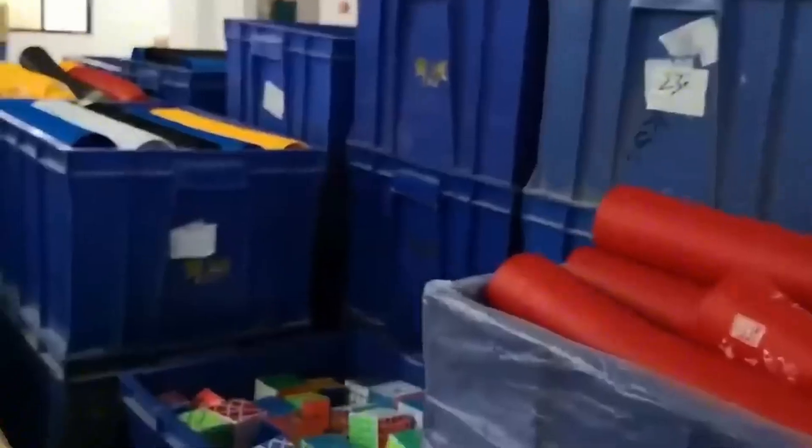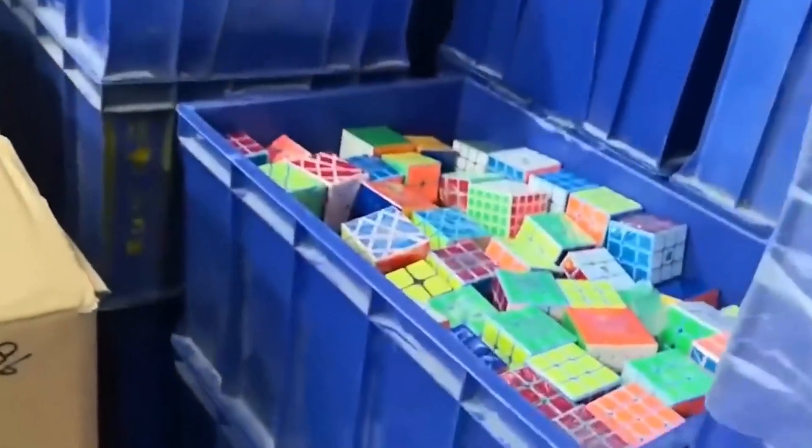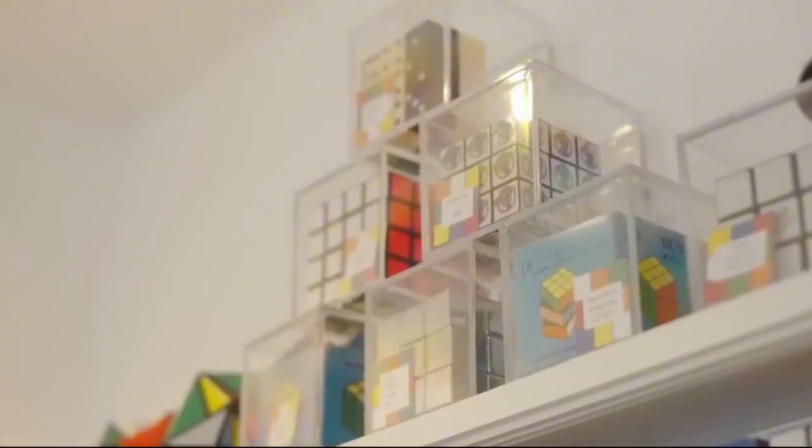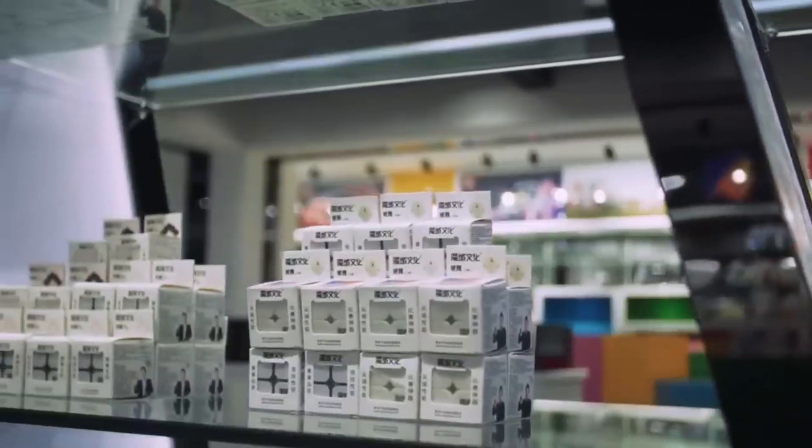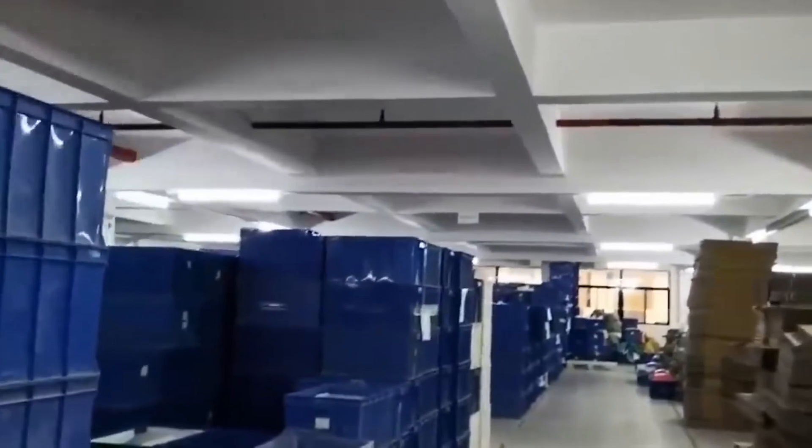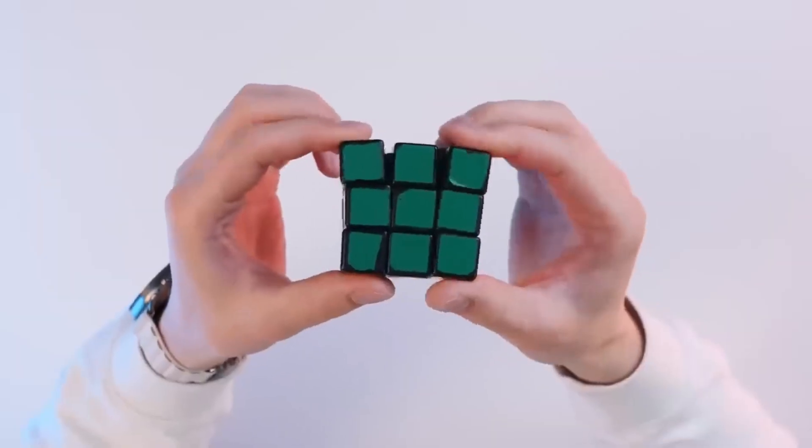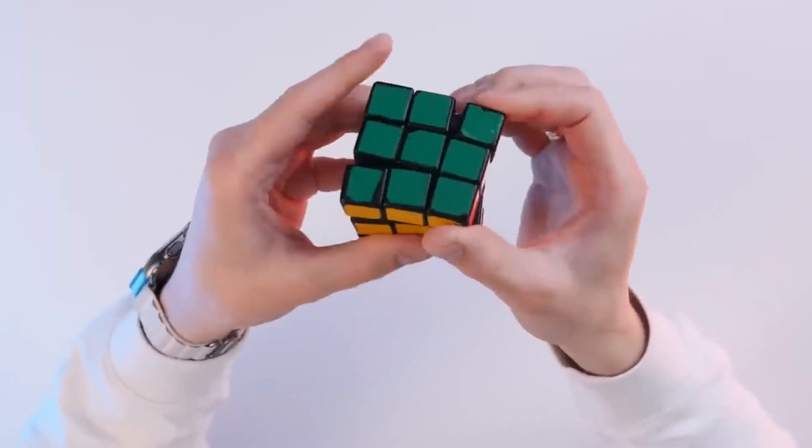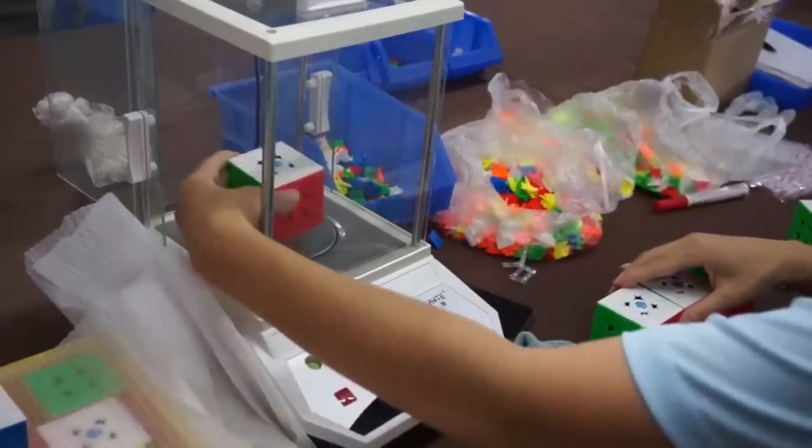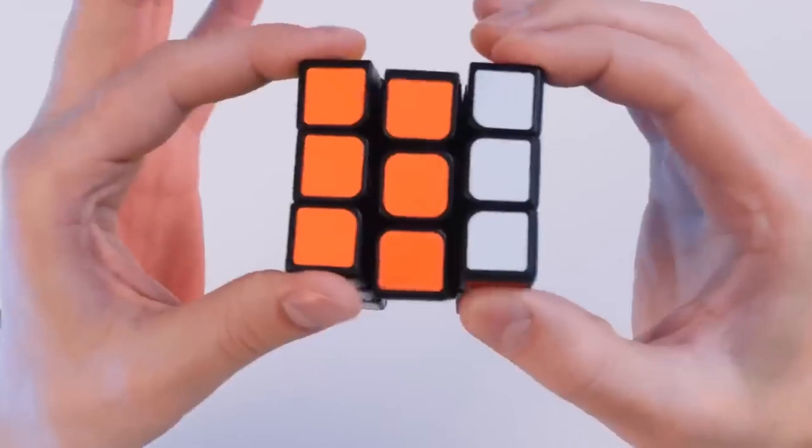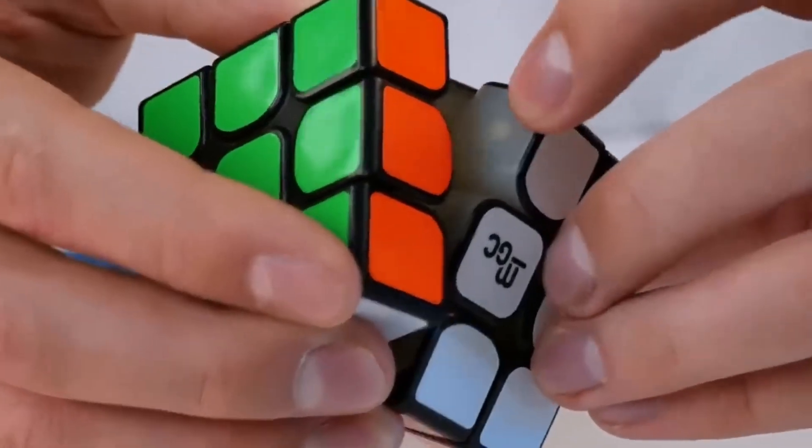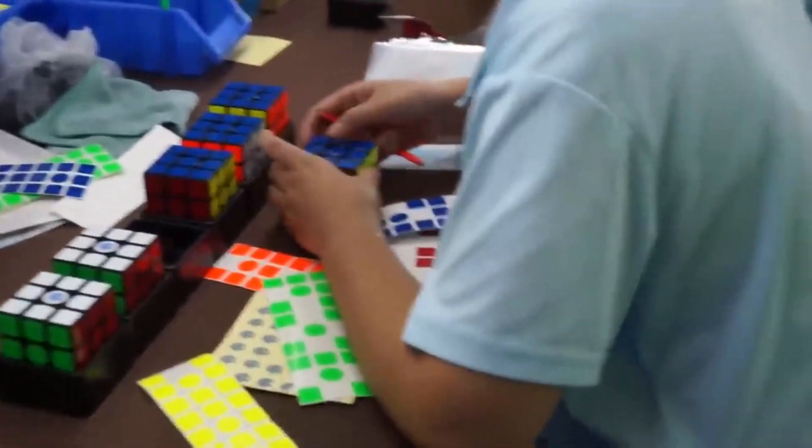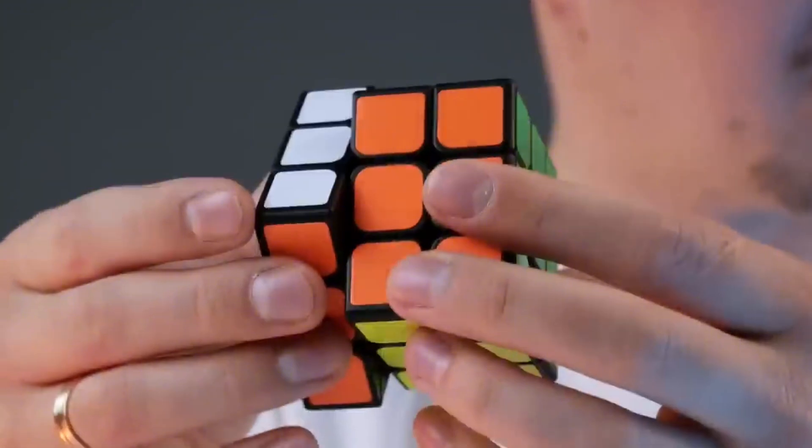Before leaving the factory, each Rubik's cube undergoes extensive quality control and rigorous testing to ensure excellence. Every detail is thoroughly checked. The correct alignment and assembly of all parts is verified, the accuracy of color labeling is ensured, and the smooth operation of the cube is evaluated. In addition, specific tests are carried out to confirm that the cube meets the standards of smooth spinning and durability, ensuring an optimal and long-lasting gaming experience for the end user.